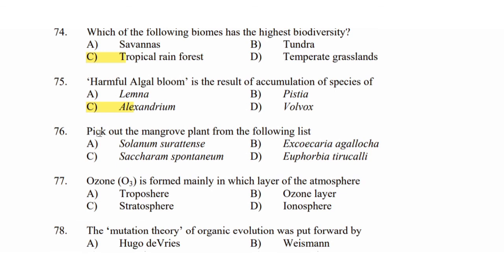Question 76: Pick out the mangrove plant from the following list. Option A: Solanum suratins. Option B: Excoecaria agallocha. Option C: Saccharum spontaneum. Option D: Euphorbia. The answer is Option B: Excoecaria agallocha, which is a mangrove plant.